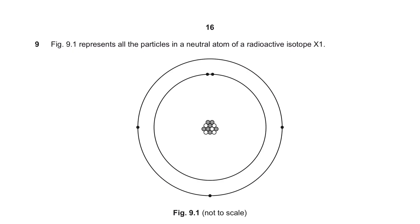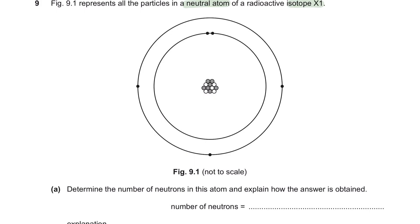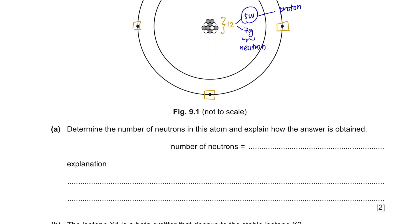Question 9. Figure 9.1 represents all the particles in a neutral atom of a radioactive isotope x1. Before answering the question, let's look into this structure. There are 5 electrons on the shell of this atom and a total of 12 protons plus neutrons in the nucleus. It consists of 5 white particles and 7 grey particles. Since an atom has an equal number of protons and electrons, the white particles would represent the proton number, leaving the grey particles to be your neutron number. Question A: Determine the number of neutrons in this atom and explain how the answer is obtained. As we have figured it out, the number of neutrons would be 7. The explanation is that the number of electrons is equal to the number of protons. This means the white particles are protons and the remaining particles, which are the grey particles, would represent neutrons.